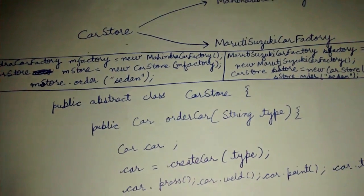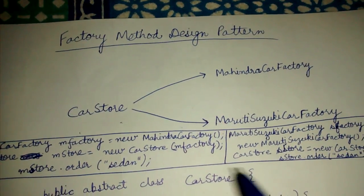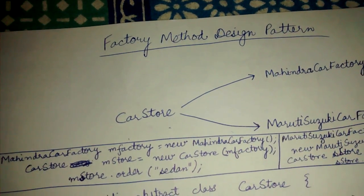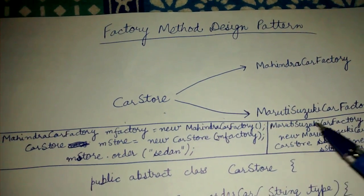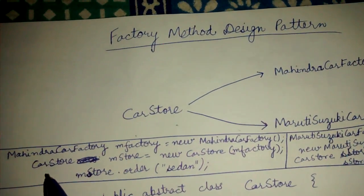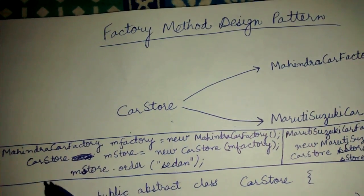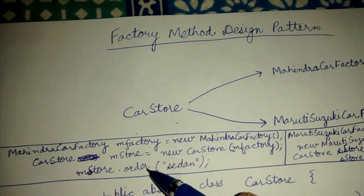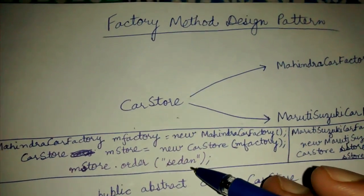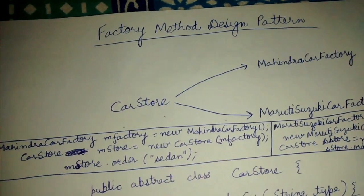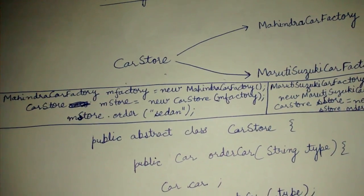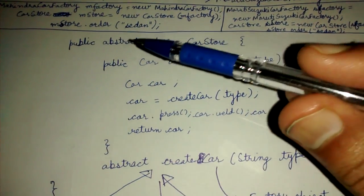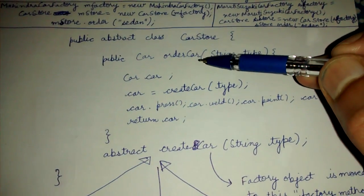The problem with this approach is that we cannot see the implementation of the car store — that implementation is not transparent to us. Whatever Mahindra car factory or Maruti Suzuki car factory want to use, they can use their own car store class and its order method's implementation. They can skip painting, do welding as they like, etc. We want to take control of those things.